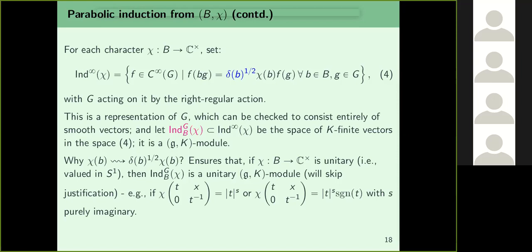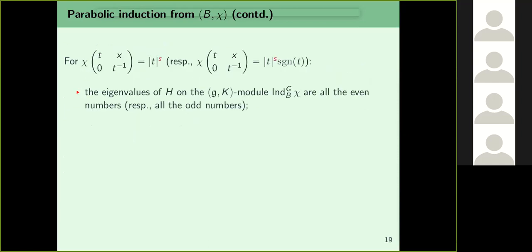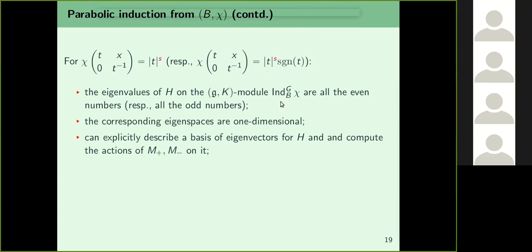We will not need the precise definition of the induced representation; all we need are some properties. The eigenvalues of H on the (g,K)-module Ind(chi): if chi has no sign factor, the eigenvalues are all even integers {0, ±2, ±4,...}; if chi includes sign(t), the eigenvalues are all odd integers {±1, ±3,...}. The corresponding eigenspaces (weight spaces) are all one-dimensional. One can explicitly describe basis eigenvectors for H and say what M+ and M− do to them.